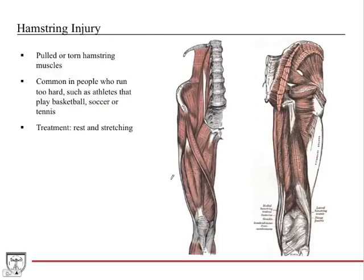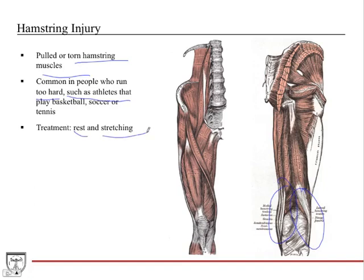Hamstring injury — pulling a hamstring — involves pulled or torn hamstring muscles on the back of the thigh. It's common in athletes who run too hard, such as those playing basketball, soccer, or tennis, especially without proper stretching, or if someone out of shape runs a lot. Best treatment is rest and better stretching.